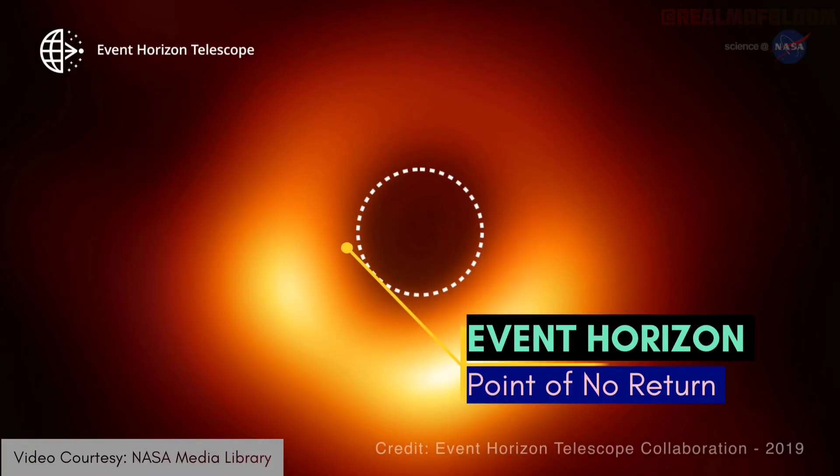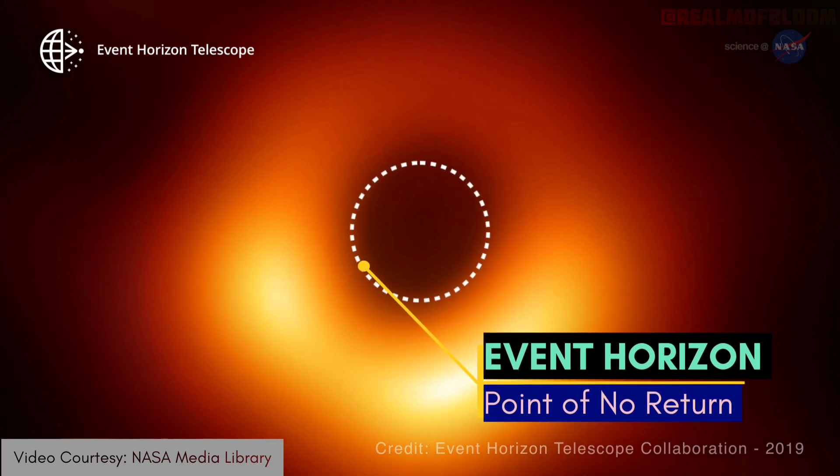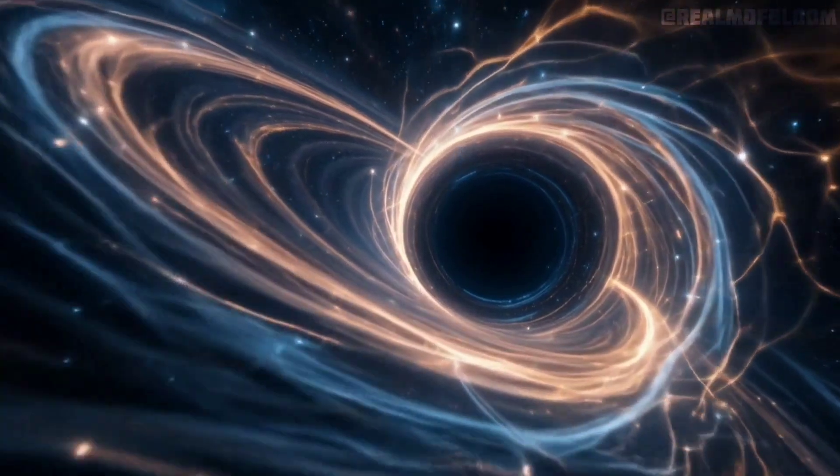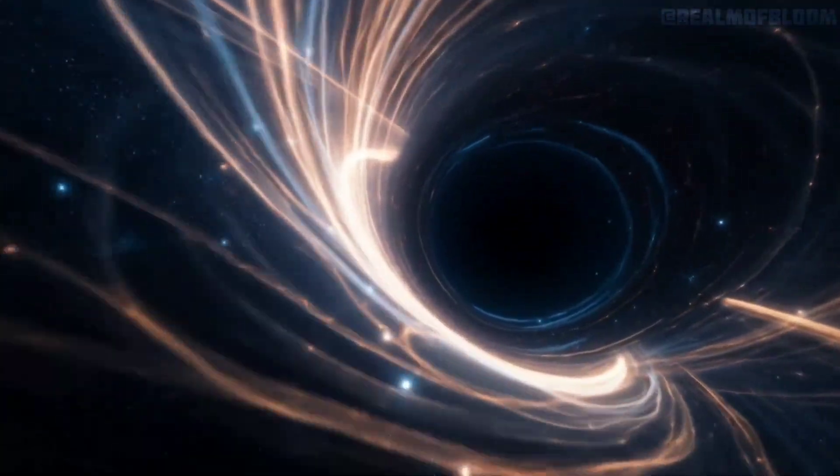Event horizon. This is the boundary around the black hole. It's not just a physical surface, but rather a point of no return. Once something crosses the event horizon, including light, it can't escape the black hole's gravity.